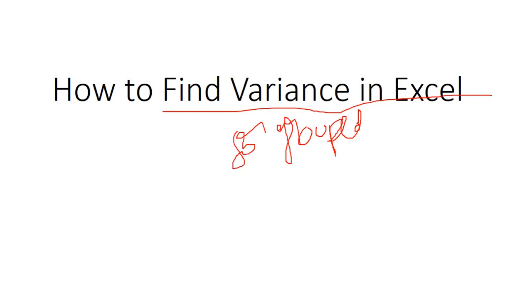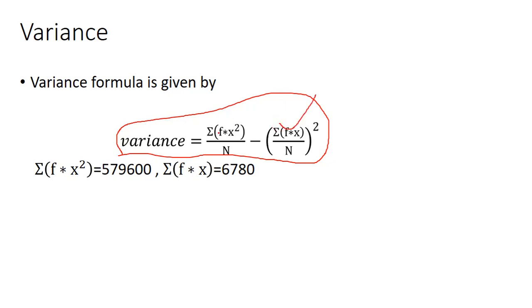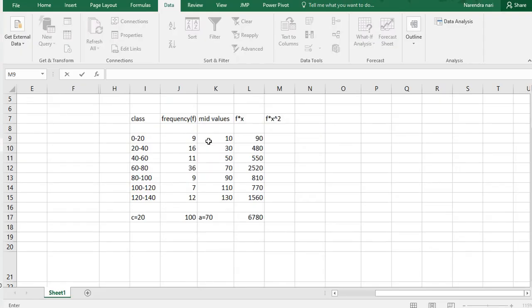Now we can see what is the formula for variance for group data. This is the formula — this is the mean, which we have already found. Now we need only this part: the summation of fx squared. We can find this value through Excel.